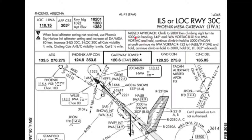Here's the Missed Approach area. Missed Approach says climb to 2800, then climbing right turn to 5000 via heading 145, and the IWA Vortac radial 015 to IWA Vortac and hold — continue climb and hold to 5000. If you have TACAN, TACAN aircraft continue via the IWA Vortac radial 122 to Halb 9.9 DME and hold, continue climb and hold to 5000. Hold southeast, left turns with 302 degree inbound.